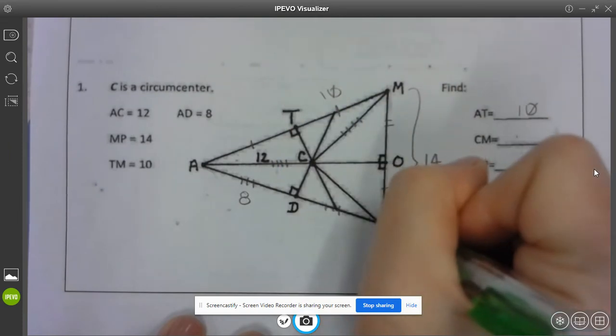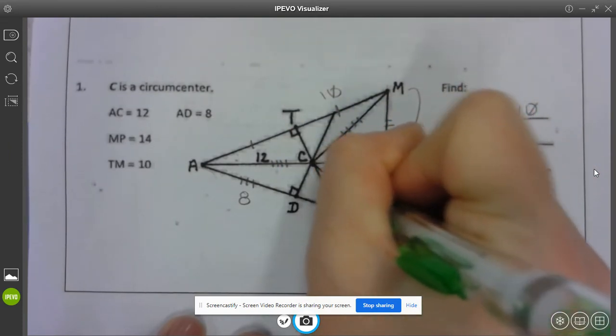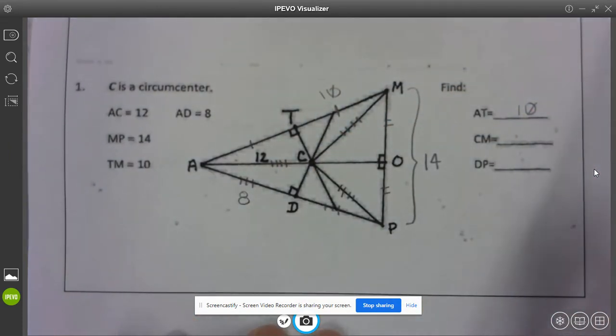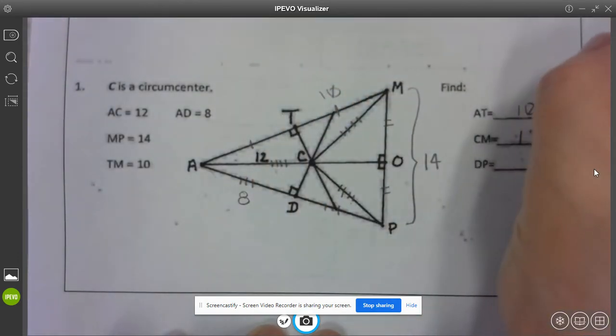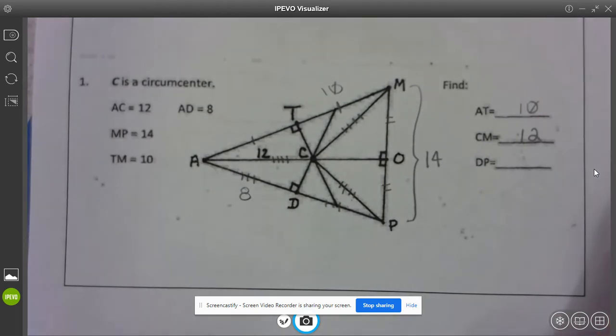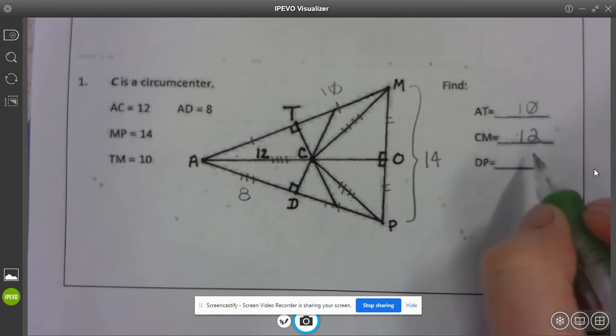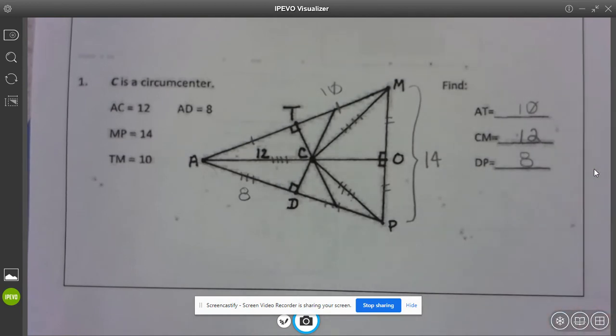From C to my vertex M I can put four tick marks there and from C to vertex P I can also put four tick marks there. So that tells me all three of those are 12. So CM is 12, and then DP would be 8.